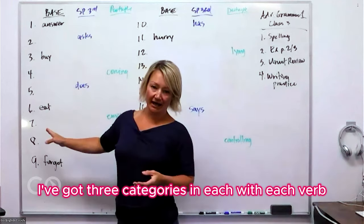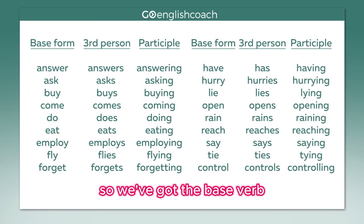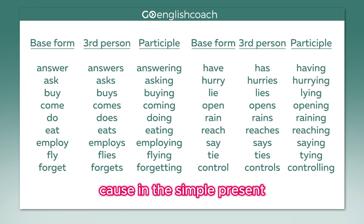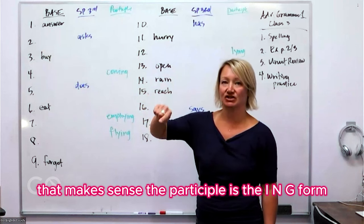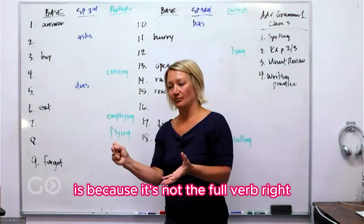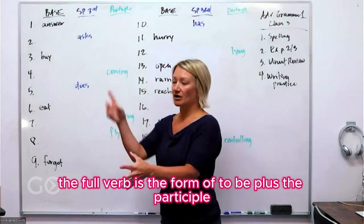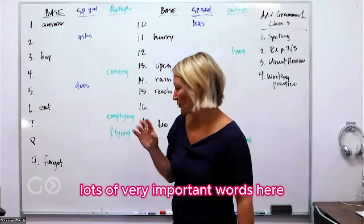I've got three categories for each verb. We've got the base verb, the simple present third person — because in the simple present we don't really change much except in that third person — and then the participle category. The participle is the ING form. The reason we call it the participle is because it's not the full verb; the full verb is the form of 'to be' plus the participle.